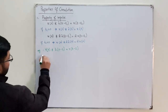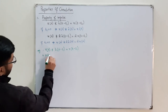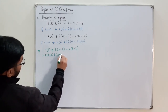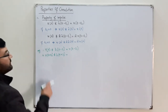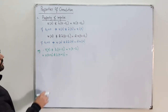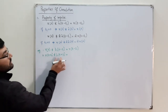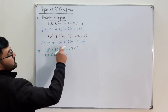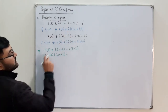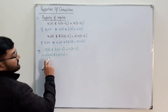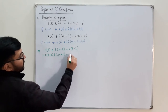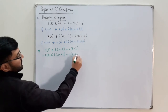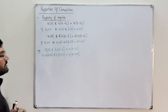If your input is u(t + 3) convolved with δ(t + 2), you apply the shift property: x(t) shifted by t₁. You have +3 and you add +2, so the result is u(t + 5). You can confirm this by the conventional method.